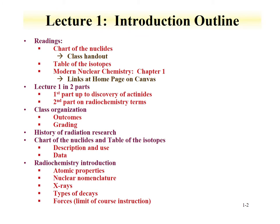The links are at the homepage on Canvas for these textbooks. Lecture 1 is divided into two parts. The first part goes up to the discovery of the actinides, and the second part focuses on radiochemistry terms. This first part covers the class organization — outcomes and grading — and then a history of radiation research. Lecture 2 will cover the chart of the nuclides and table of the isotopes, and an introduction to terms often used in radiochemistry.